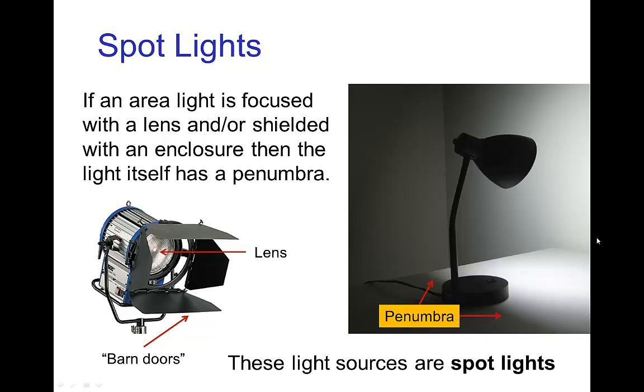Finally, one of the more important types of light sources used in cinematography are spotlights. This is sort of an area light that has a focus using a lens and also shielding from an enclosure. In this case, the light source itself has a penumbra because of the use of the lens and of the barn doors enclosure.